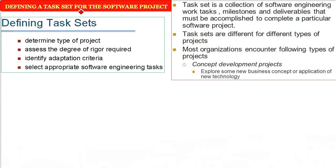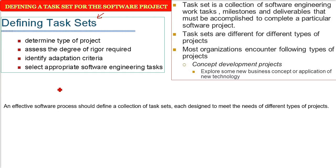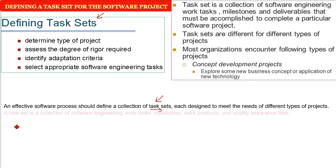Defining a task set for a software project. For any work to be scheduled, it has to be compartmentalized, given time, and properly arranged so that it can be tracked and controlled. An effective software process should define a collection of task sets — a set containing various tasks, each designed to meet the needs of different types of projects, because projects can be of different types.